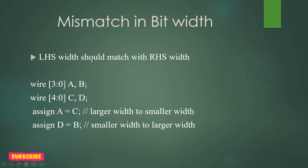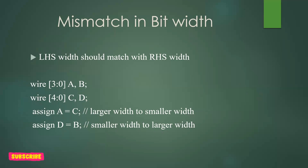Next is mismatch in bit width. The LHS width should be the same as the RHS width. In this example, inputs a and b are both [3:0] — 4 bits — while c and d are [4:0] — 5 bits. When assign a = c, you are assigning a 5-bit value to a 4-bit signal — larger width to smaller width. When assign d = b, you are assigning a 4-bit value to a 5-bit signal — smaller to larger. Both are incorrect, and you should check the widths of nets carefully before assigning.